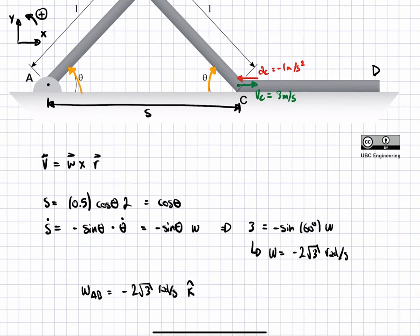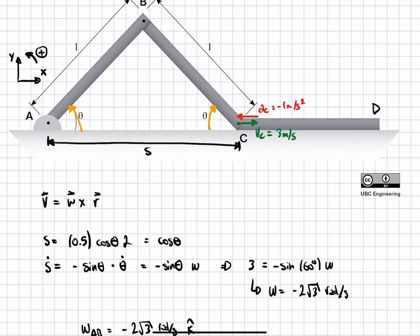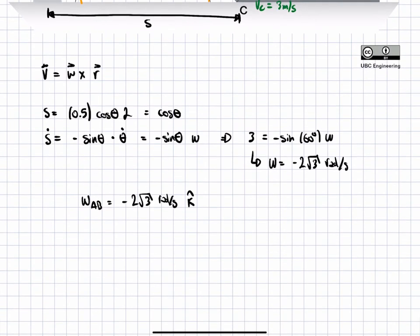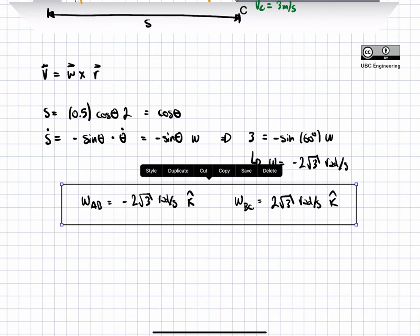For arm BC, it's just the opposite. Theta for BC follows the reverse convention — rotating counterclockwise actually decreases the angle — so whichever value we solve for, we reverse the direction. Both arms twist inward, but BC twists in the clockwise direction relative to our convention, giving a positive rotation. Therefore, omega BC equals positive two root three radians per second in the K-hat direction.